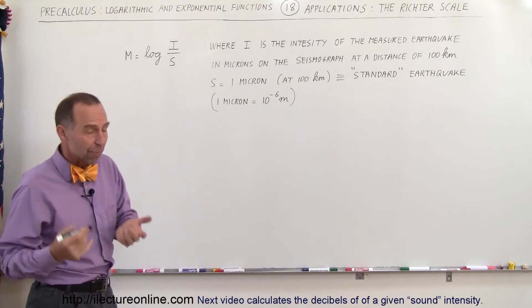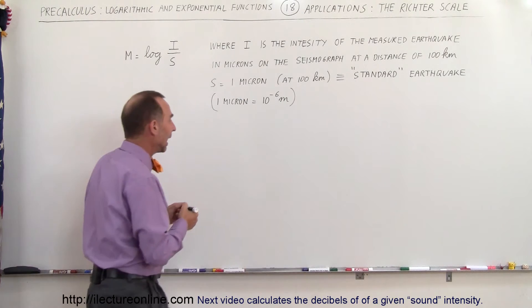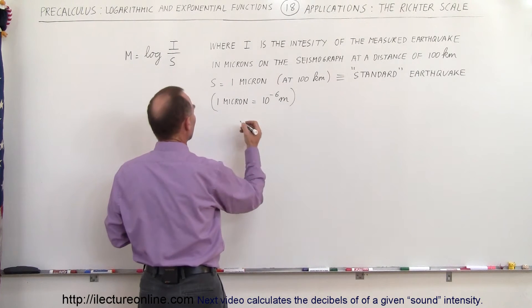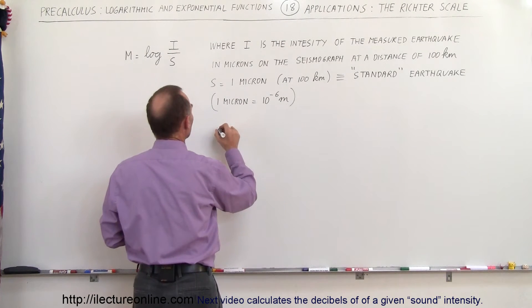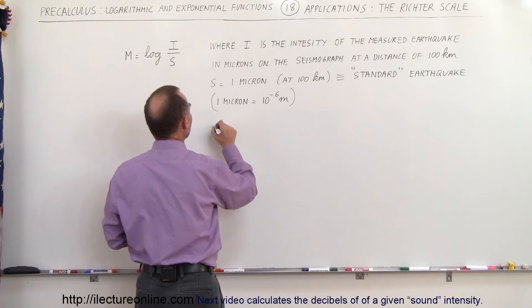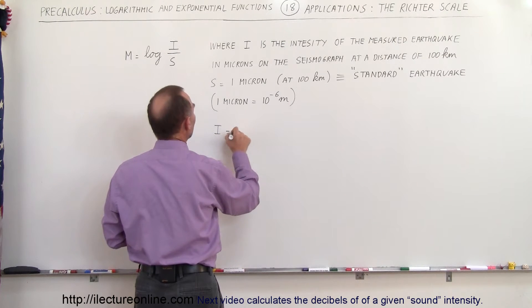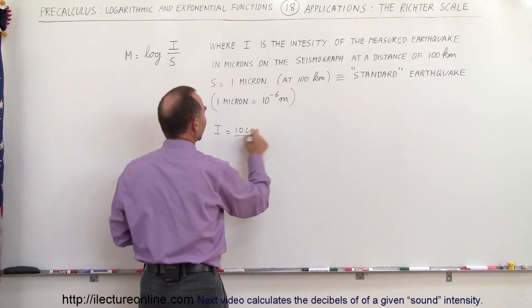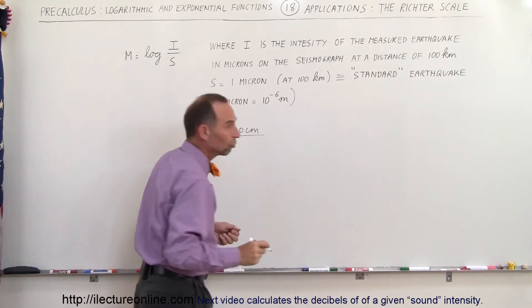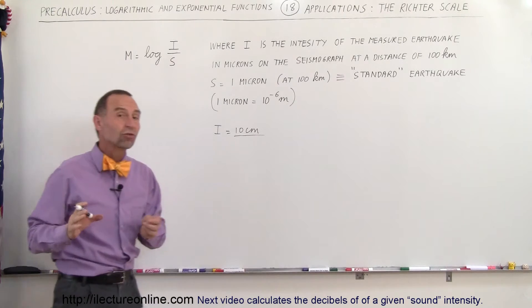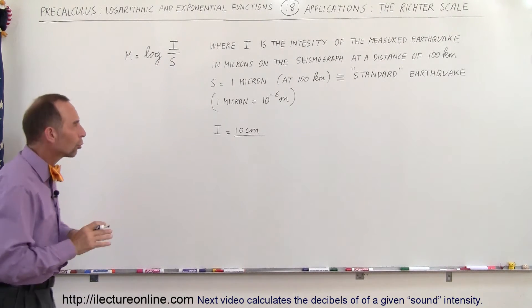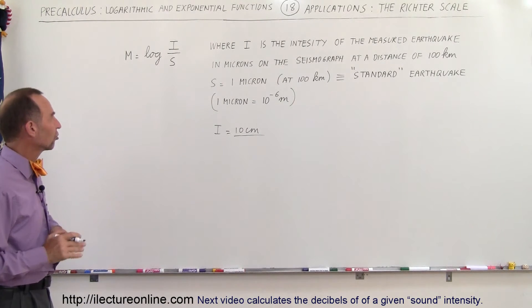So let's say that we make a measurement with a seismograph at a distance of 100 kilometers, and the intensity is equal to 10 centimeters on the seismograph. What is the measure of that earthquake on the Richter scale?